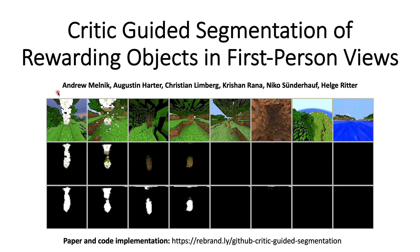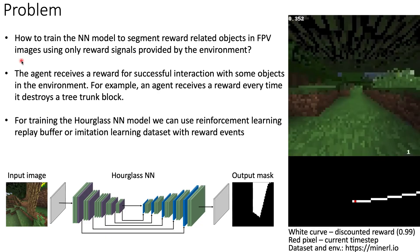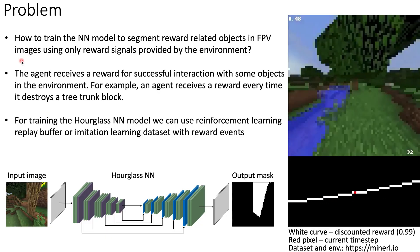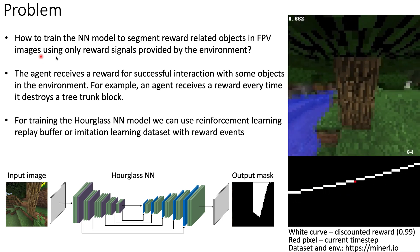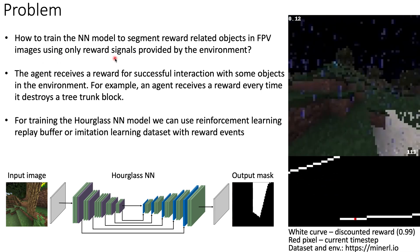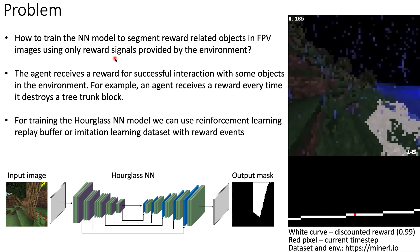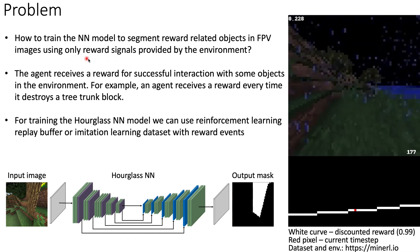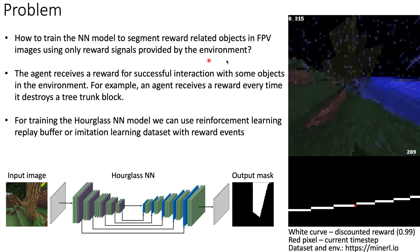Hi, I'm Andrew, and I will present our work on Critic Guided Segmentation of Rewarding Objects in First-Person Views. Paper and code implementation you can find at this link. We solved the following problem in this work: how to train a neural network model to segment reward-related objects in first-person view images using only reward signals provided by the environment.